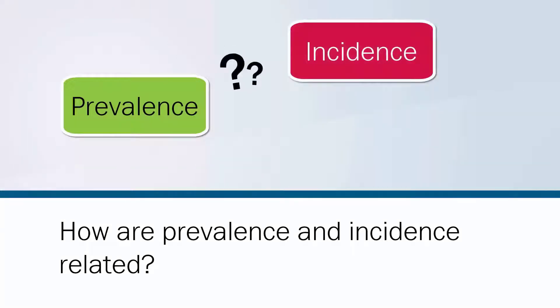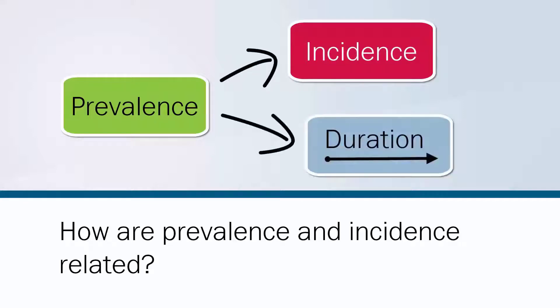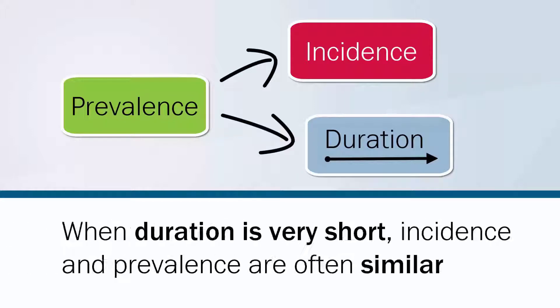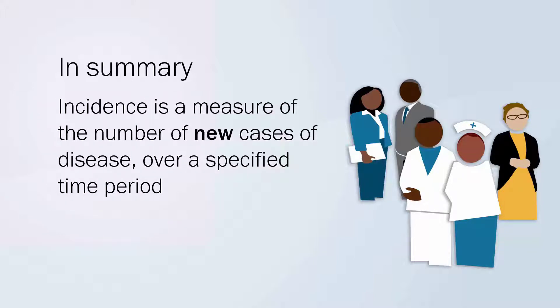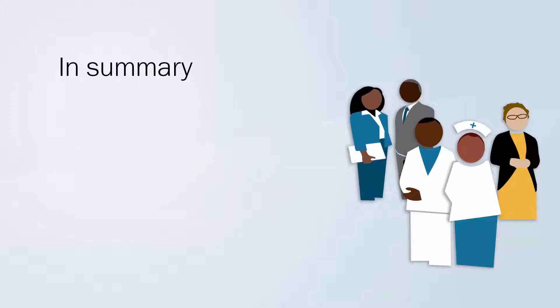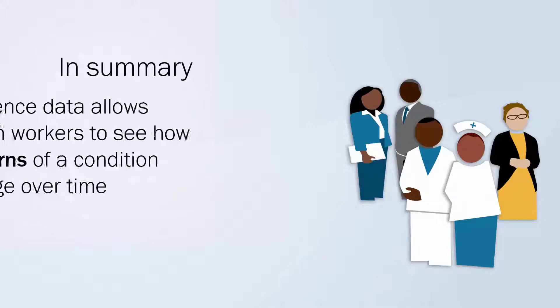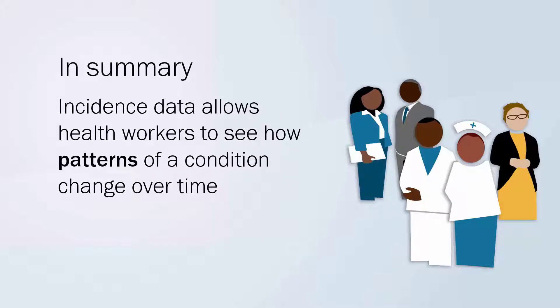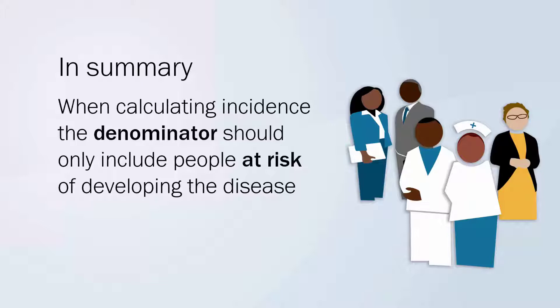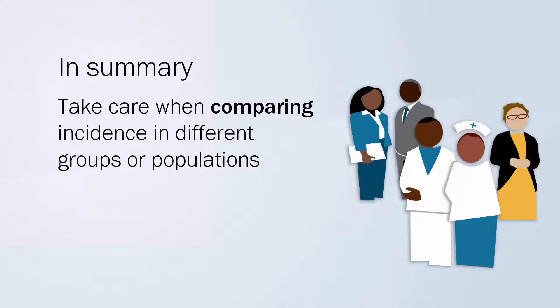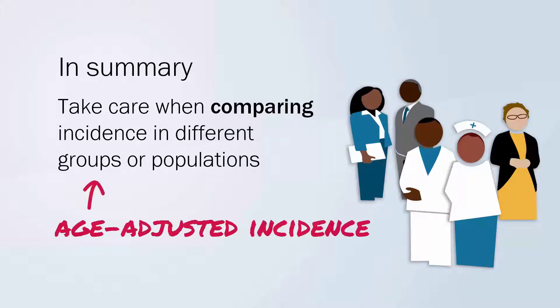How are prevalence and incidence related? Prevalence depends on incidence but also on the duration of the disease — until cure or death. When the duration of a disease is very short, incidence is likely to be similar to prevalence. In summary, incidence measures the number of new cases of disease over a specified time period, allowing us to determine a person's risk. Incidence data allows health workers to see how patterns of a condition change over time. When calculating incidence, the denominator should only include those at risk, and care must be taken when comparing across groups — this is why age-adjusted incidence is often calculated.